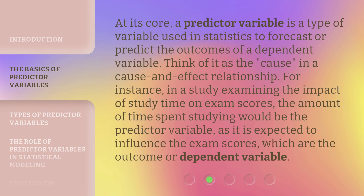At its core, a predictor variable is a type of variable used in statistics to forecast or predict the outcomes of a dependent variable. Think of it as the cause in a cause-and-effect relationship. For instance, in a study examining the impact of study time on exam scores, the amount of time spent studying would be the predictor variable, as it is expected to influence the exam scores, which are the outcome or dependent variable.